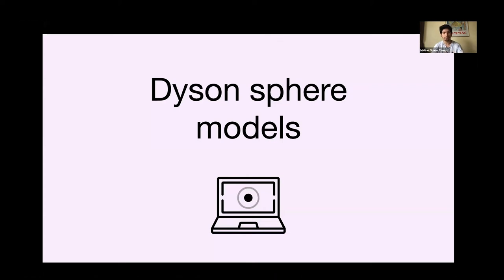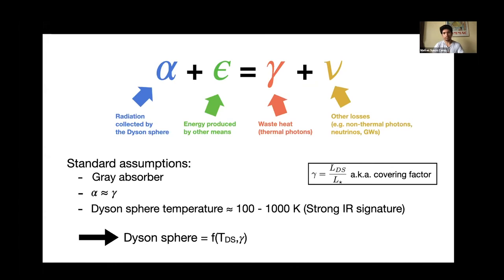So then we can proceed to talk about Dyson sphere models. However, we have to make some assumptions. And here we have them. The standard assumptions is that they are gray absorbers. Then that in this energy balance equation, alpha and gamma are equal. That means that the radiation collected by Dyson sphere and the waste heat are going to be the same or what comes is left. And also that this waste heat can be modeled as a black body with a temperature in the range of 100 and 1000 Kelvin. Also for the sake of simplicity, I have redefined the gamma value for this expression is just the energy of the Dyson sphere normalized by the stellar energy before it is obscured. And I call it the covering factor as well. So with these assumptions, it turns out that to model a Dyson sphere, we just need two parameters, the temperature, the gamma, the covering factor.